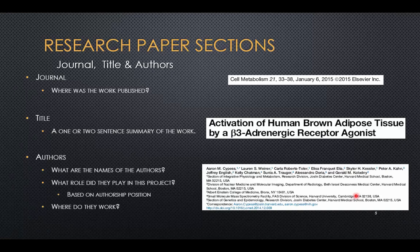Let's go bit by bit. This article was published in the journal Cell Metabolism in January of 2015. This is the volume number, and these are the pages where you'll find the information. Cell Metabolism tells you that metabolism is a focal point for this journal, so other papers in this journal may be on similar topics. Sometimes when you're searching a particular topic, you may want to look at several issues of a particular journal. The title, The Activation of Human Brown Adipose Tissue, is the one-sentence summary of what the work is about.